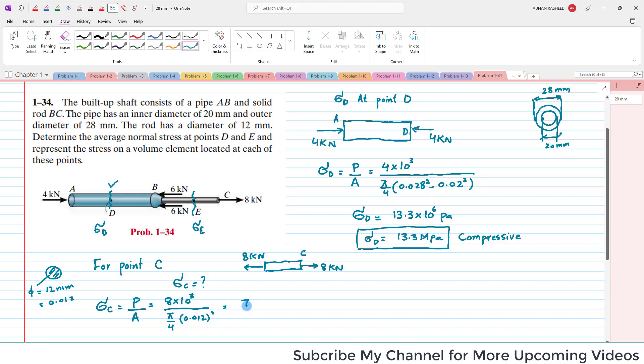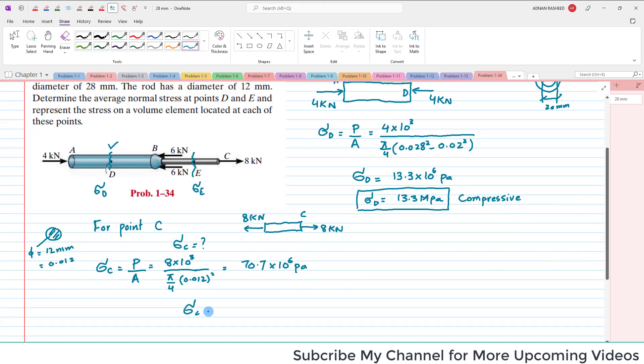When you calculate it, you will get 70.7 times 10 to the power 6 Pascals, or sigma C will equal 70.7 megapascals. This is a very easy problem. In this way you can find the stress at a given point.